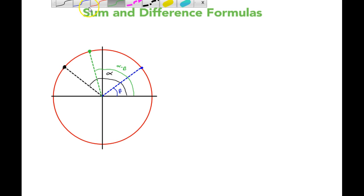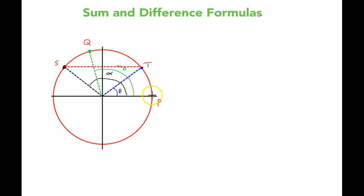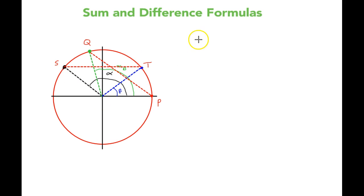So if I call this point over here the initial position, I'll call that P, and I call this Q, and I call this S and this T, then I could say that the length ST is equal to the length PQ, because they're cut out by the same angles. P, the origin, and Q are cut out by alpha minus beta — that chord PQ is also equal to the chord ST, because it is also cut out by alpha minus beta.